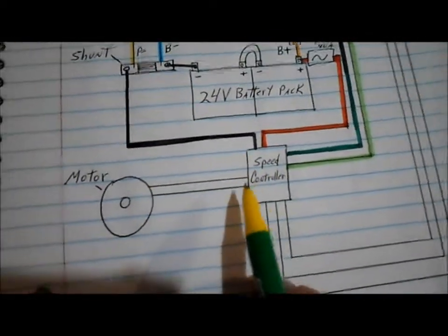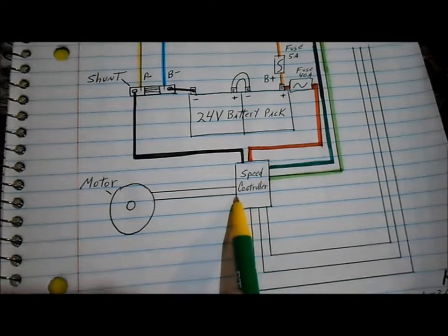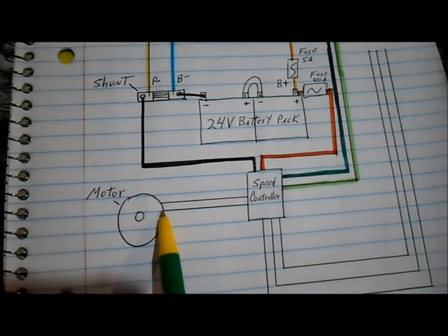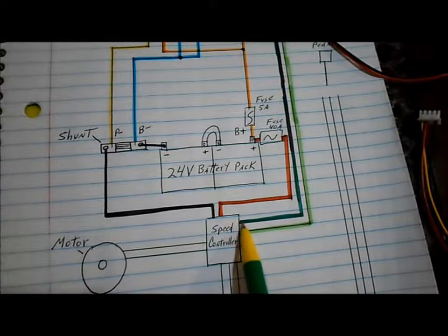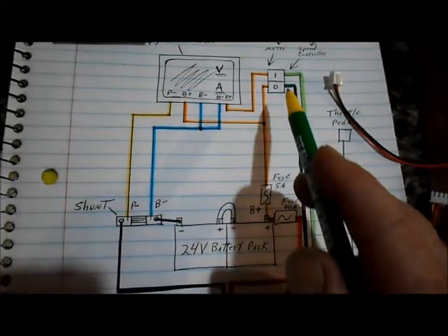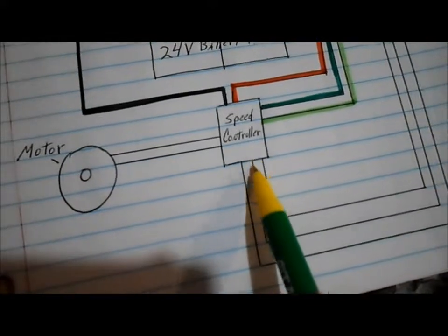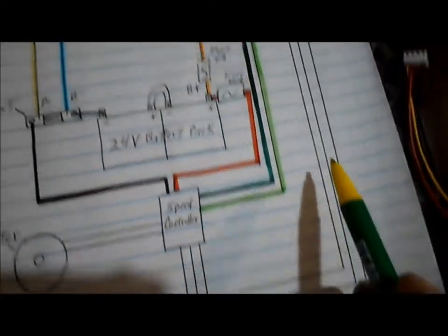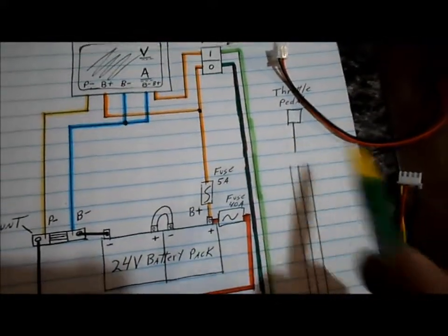And then to complete the circuit, you'd have the two lines coming out of the speed controller to the motor. You have the two lines coming out of the speed controller. That's your on off switch. And then you've got your three lines coming out of your speed controller. That's your throttle input.